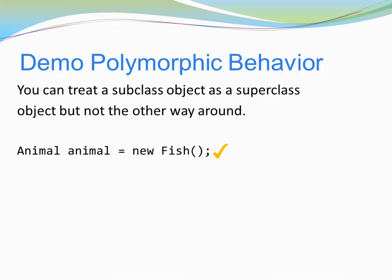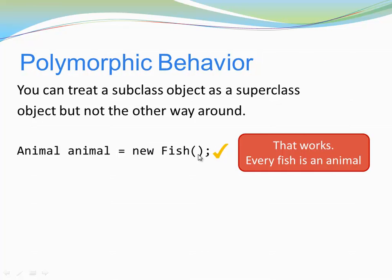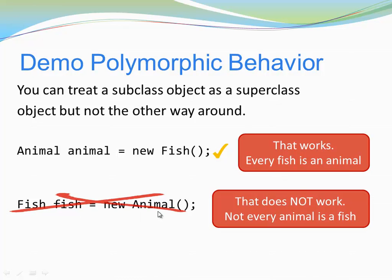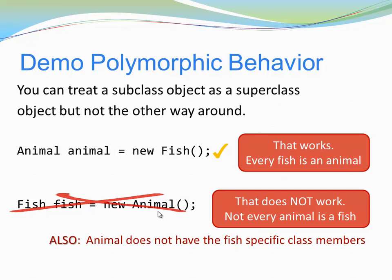You can treat a subclass object as a superclass object, but not the other way around. I can assign a new instance of Fish to myAnimal — treating a Fish object as an Animal object. Java performs this implicit type conversion for us, because every fish is an animal. But it does not work the other way around: if I try to treat a superclass object like an Animal as a Fish, it would not work, because not every animal is a fish, and animals do not have the fish-specific class members.